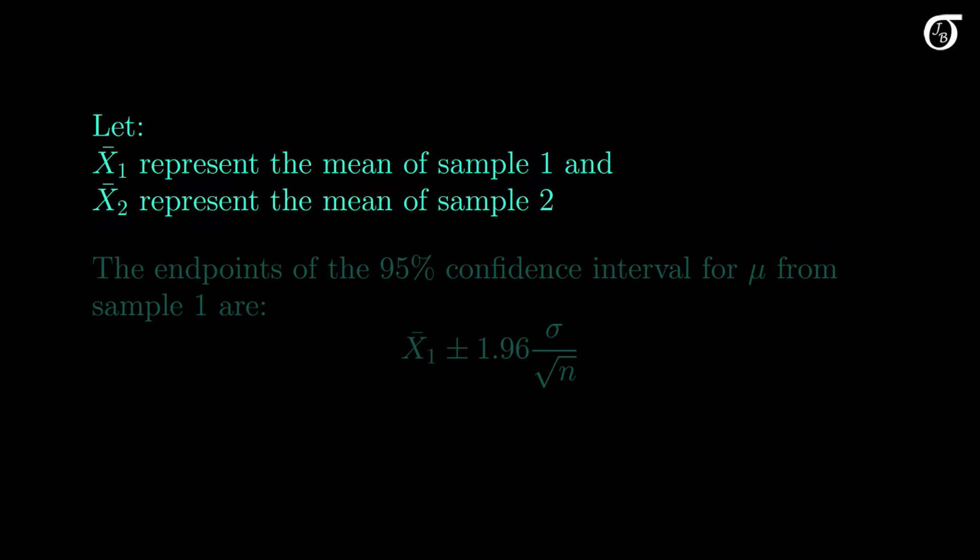Let x bar 1 be a random variable representing the mean of sample 1, and x bar 2 be a random variable representing the mean of sample 2, and let mu and sigma represent the mean and standard deviation of the population, as per usual. The endpoints of the 95% confidence interval for mu are given by this formula. We want to find the probability the mean of sample 2 falls between the lower and upper bounds of that interval, so we want to find this.